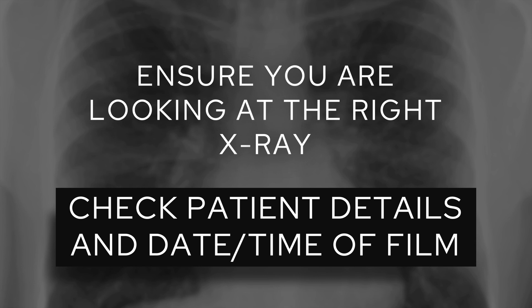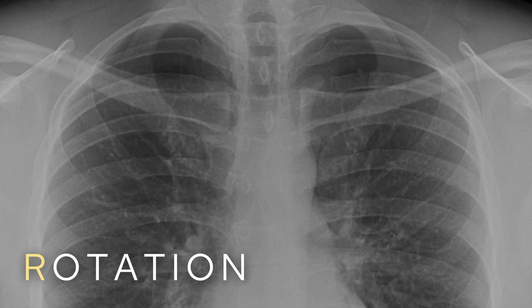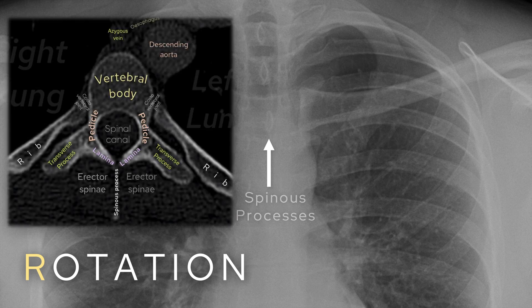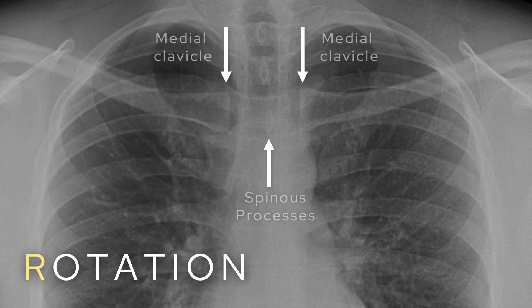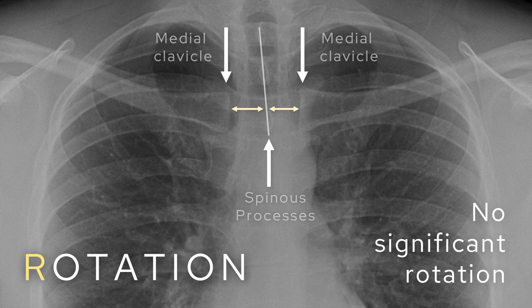Once I've confirmed I have the right X-ray, I move on to a mnemonic — RIPE C — which takes me through each part of the assessment systematically. The first letter is R for rotation. You want to find the spinous processes. A spinous process is a posterior projection from the vertebra — it's where the laminae join up, and you can see this pretty well on a chest X-ray. Then find the medial clavicles, draw a line through the spinous processes, and see if that line lies in the middle of the medial clavicles.